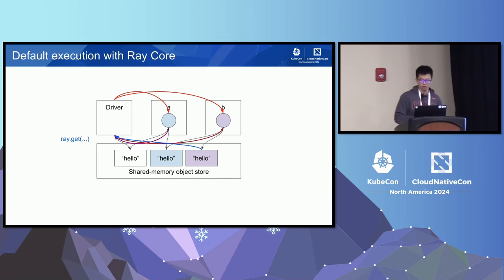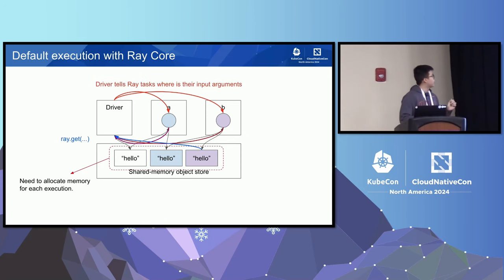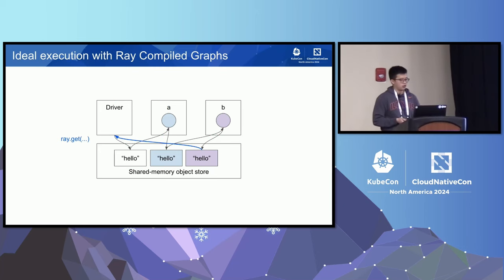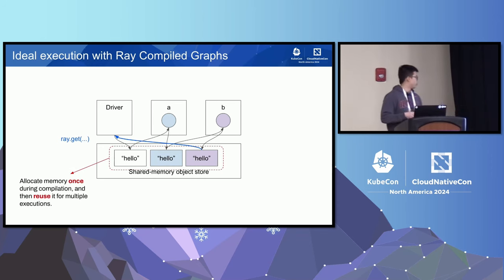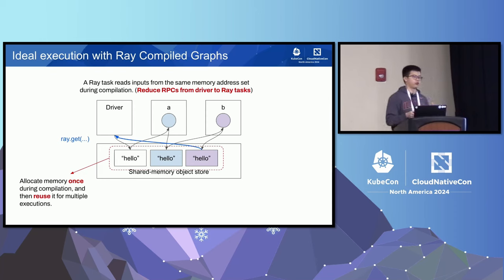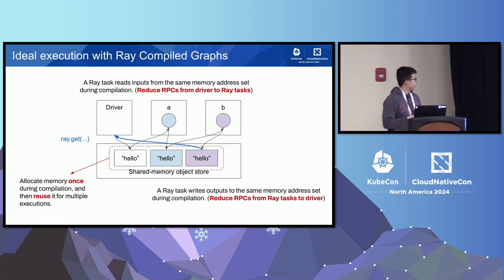To summarize the overhead of default Ray core execution: first, memory must be allocated for each execution. Second, the driver must tell each Ray task where the input argument is. Third, the Ray task must send back to the driver where the output is. With Ray Compile Graph, the ideal situation is: memory is allocated once during compilation and reused across multiple executions. The compiled graph tells the actor where to read data, so no extra RPC is needed to indicate the input argument. And the actor always writes output to the same place, so the driver doesn't need another RPC to find the output.